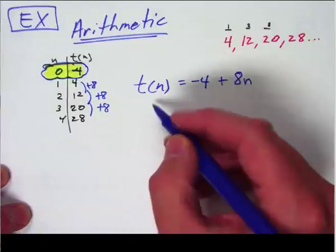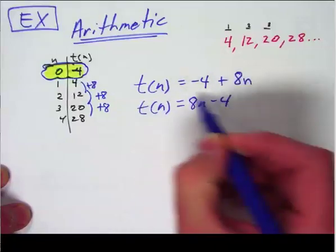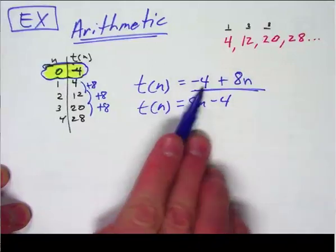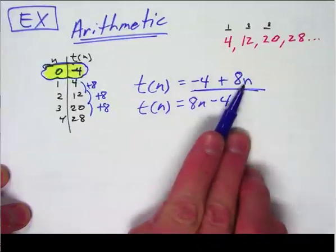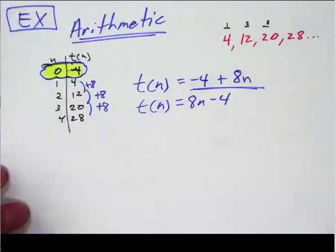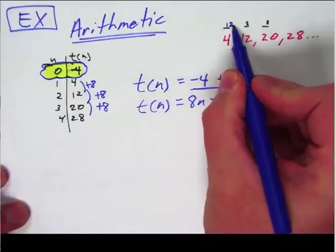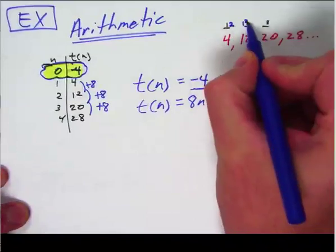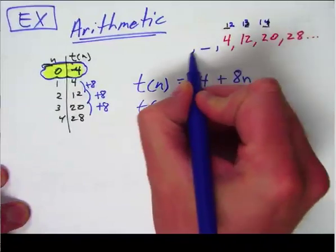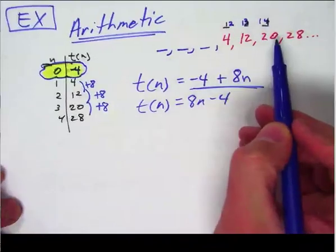Sometimes people rewrite that as 8n minus 4. That's a good answer because you're listing what it starts at and what it goes by. Now, if we take the exact same sequence and they say this isn't the first term — this is the 12th term, and the 13th term, and the 14th term — and you've got to figure out all those terms before it to write the equation, that's a lot of work.